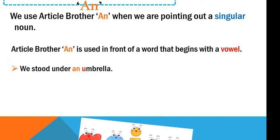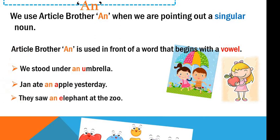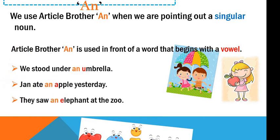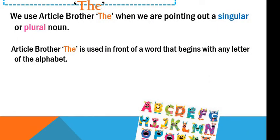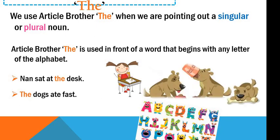Examples of article AN: we stood under an umbrella. John ate an apple yesterday. And they saw an elephant at the zoo. The last article brother is THE. We use article brother THE when we are pointing out a singular or plural noun. Article brother THE is used in front of a word that begins with any letter of the alphabet. For example: Nan sat at the desk. The dogs ate fast. And some boys sat on the steps.